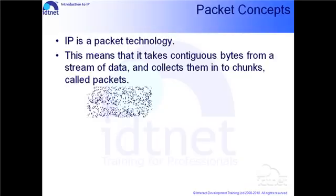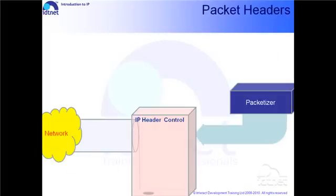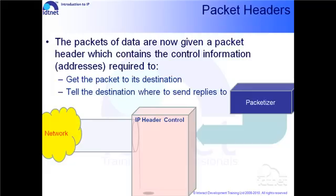Some network technologies, like IP, call these packets datagrams. The packets or datagrams are now given some control bytes called the packet header. The packet header contains various bits of control information, including the addressing information required to get the packet to their destination. They also have a sender's address so that the destination knows where to send the replies to. It is this header that is the Internet Protocol and is therefore referred to as the IP header.